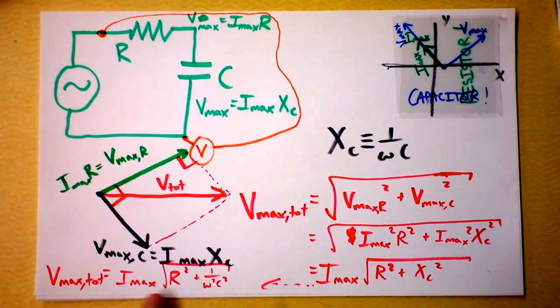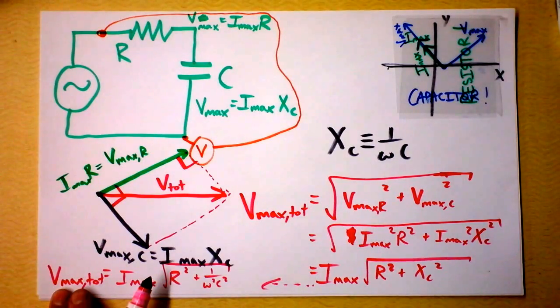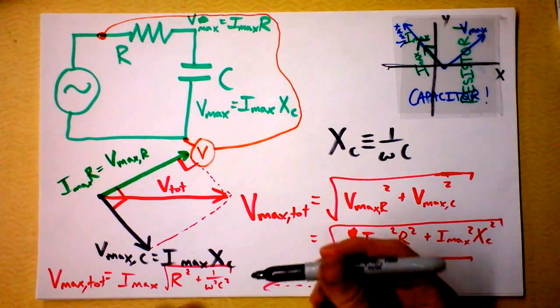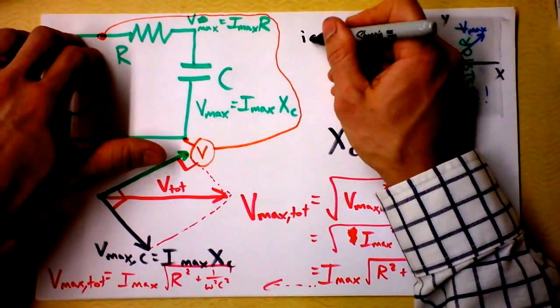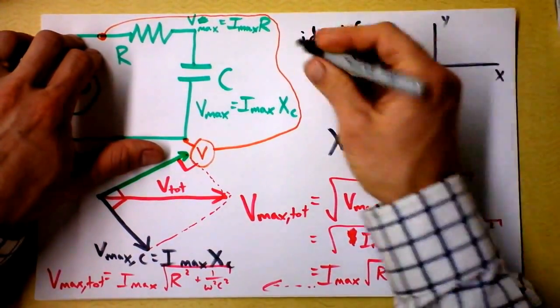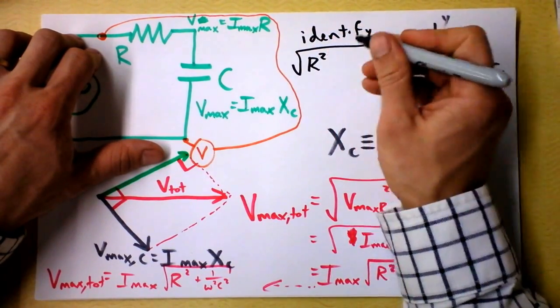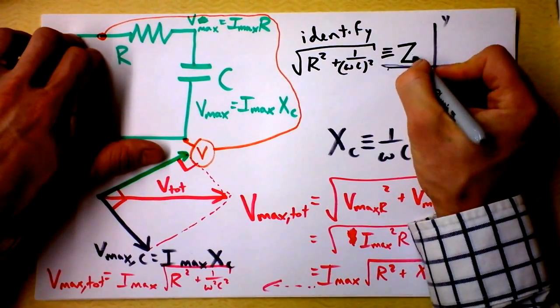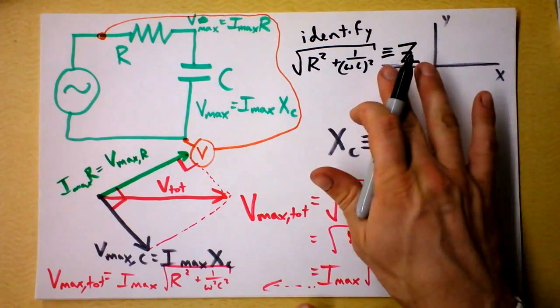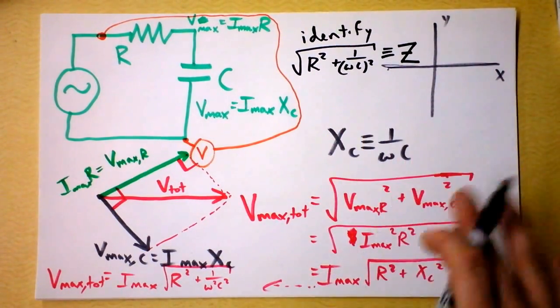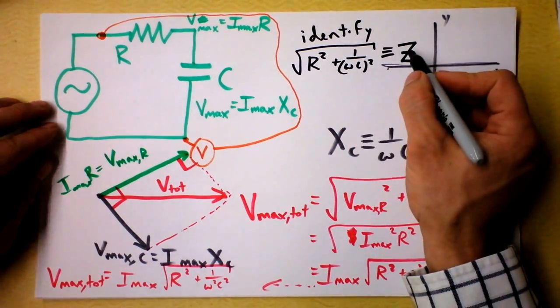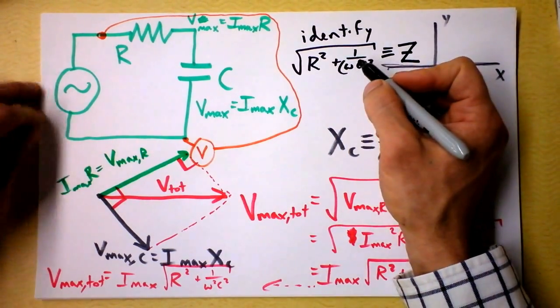So now I'm going to identify this as looking a whole lot like Ohm's law. Look at this. Vmax total is Imax total times this thing, which is sort of giving a difficulty towards letting current flow. And so I identify this thing. Here's my plan. Identify the square root of R squared plus 1 over omega C quantity squared to be something that we call impedance. It's a word that sounds a lot like resistance. It's something that's keeping something from happening. It's impeding the flow of current. But it's a little more subtle because it depends on frequency now. The impedance of this circuit depends on frequency and the resistance and the capacitance.